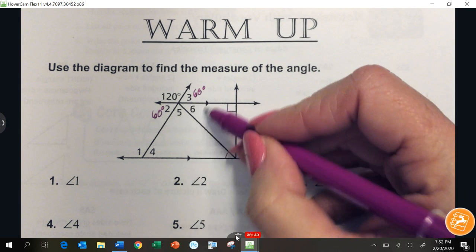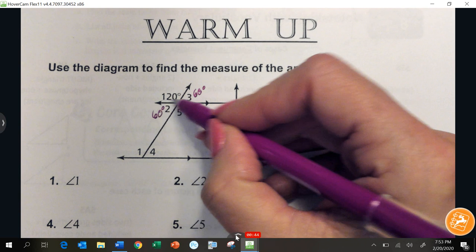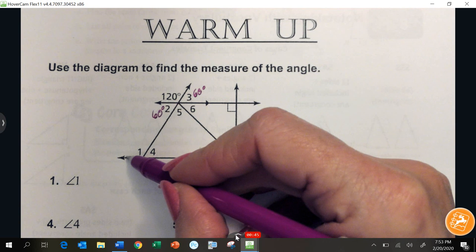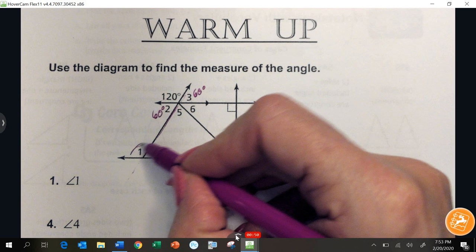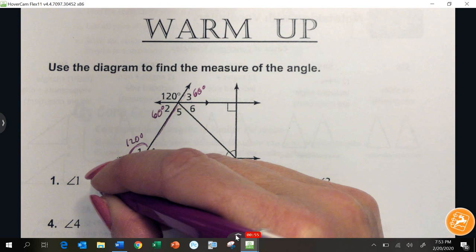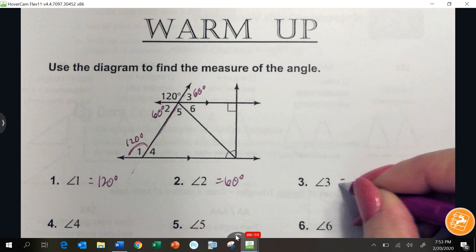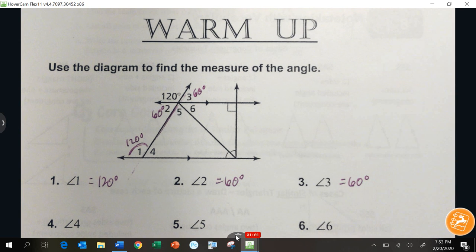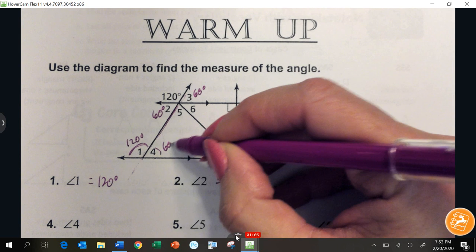Since we have two parallel lines here, 180 angle 1, these are congruent angles, 120 degrees. Now angle 4 makes a linear pair with angle 1. That one has to be 60 degrees.